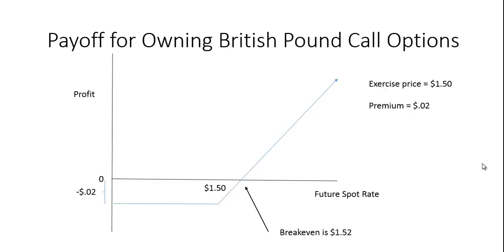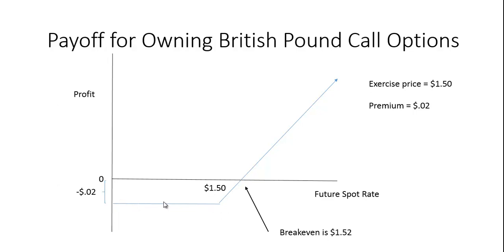Let's take a look at some payoff pictures, which may look familiar if you've studied stock options. This is the payoff picture for a call option, which gives you the right to buy at the exercise price. We'll assume the exercise price is $1.50 for one pound sterling, and for the privilege of buying at $1.50 you pay a two-cent premium. The payoff picture looks like a hockey stick graph. You start two cents in the hole, and if the price is below $1.50 you just allow the option to expire worthless.